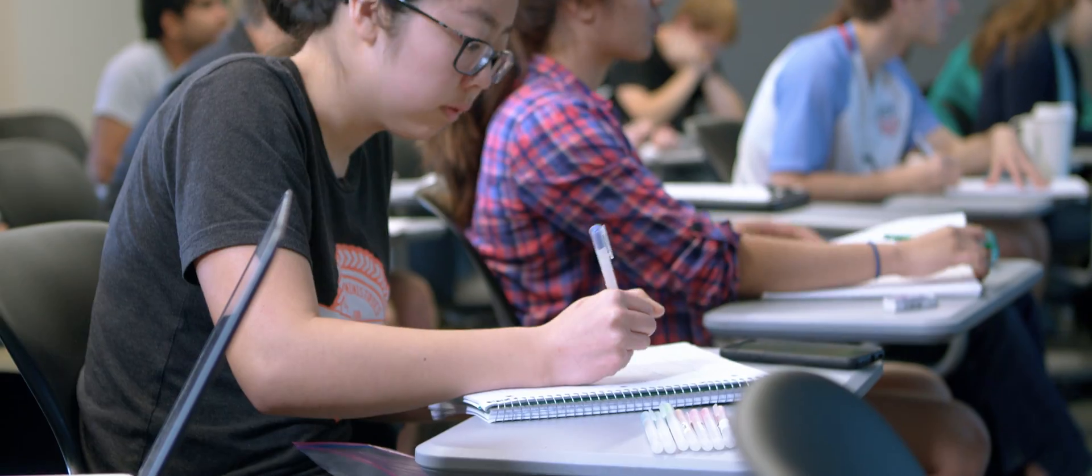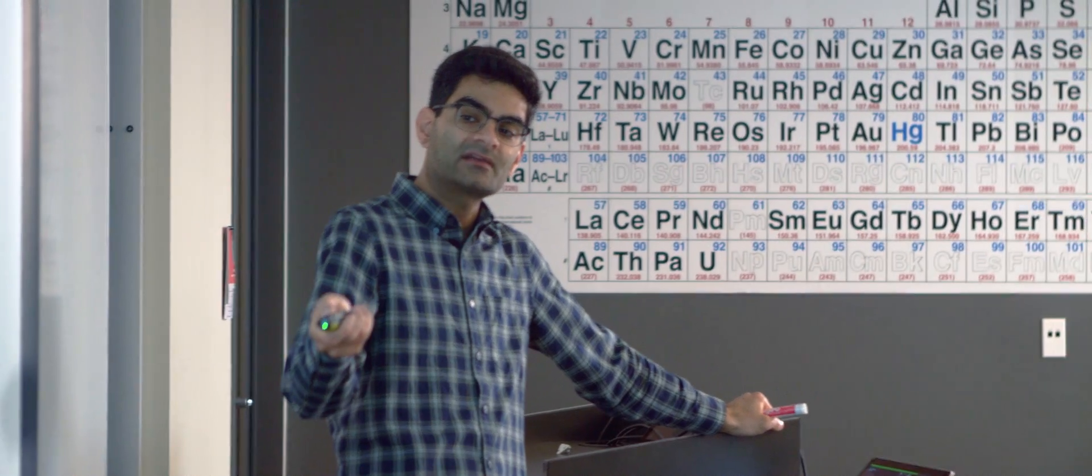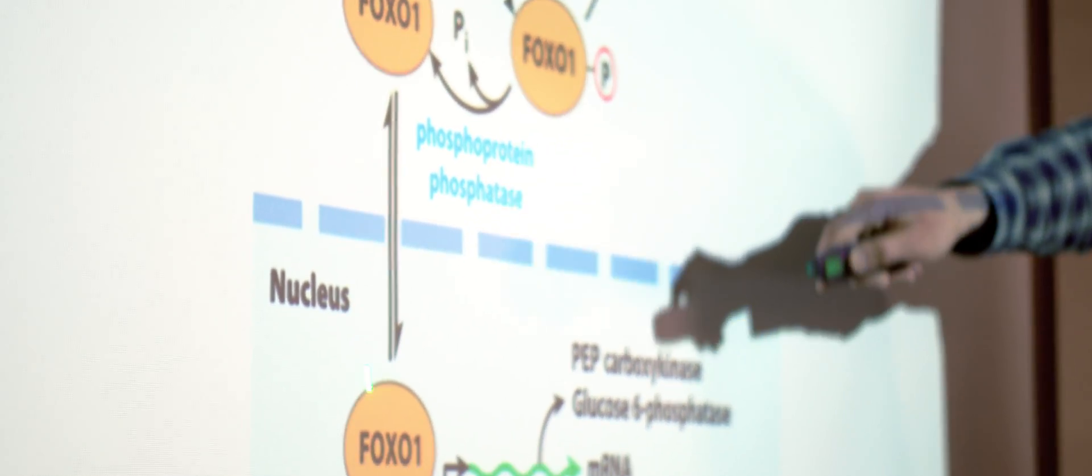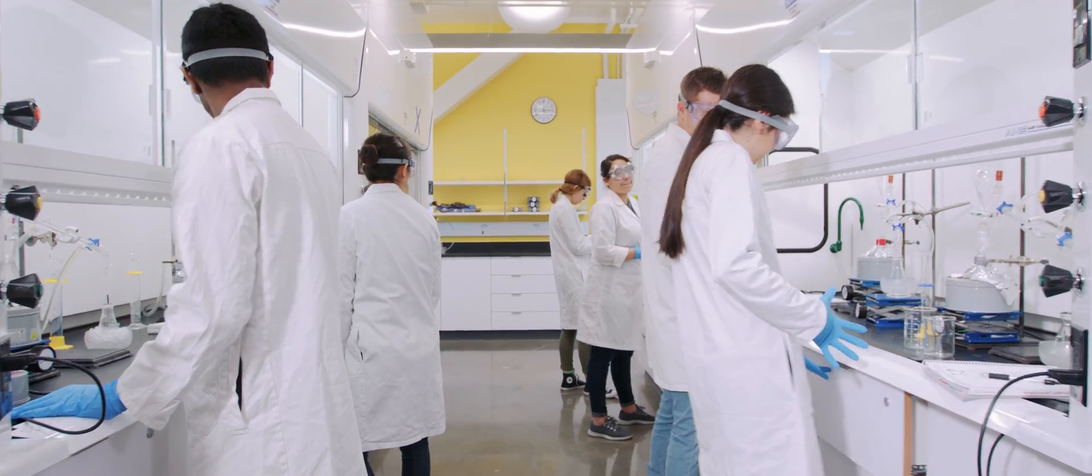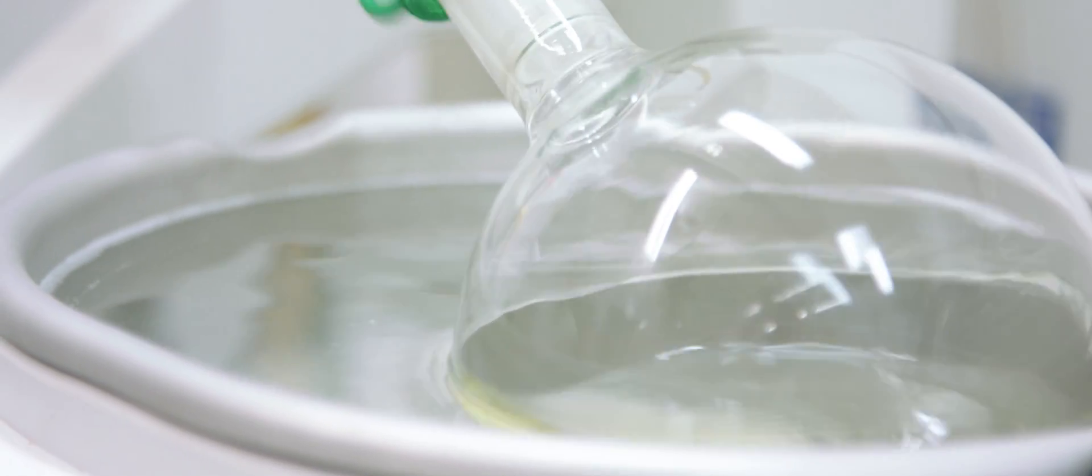At the very beginning of the chemistry degree it's a lot more class-heavy, learning the concepts in the foundational classes, but as you move up in the major now that we've learned these concepts let's move it into the lab. We learn how to use a lot of instruments and stuff that are very practical things that if you go into a career in a lab you would need to use.